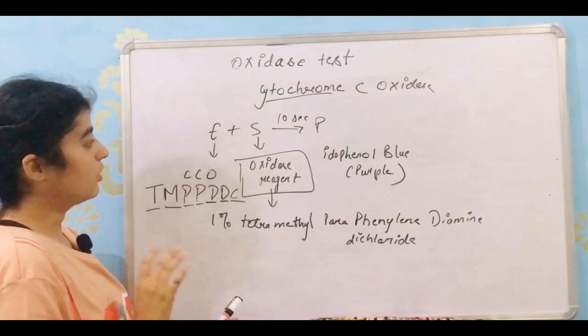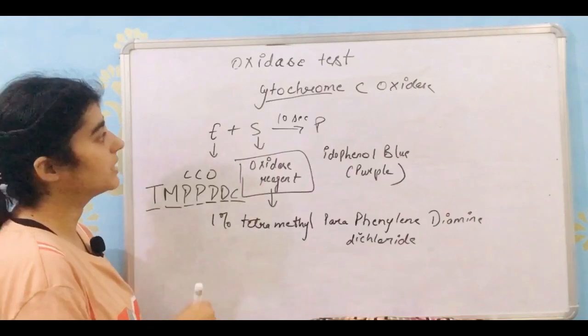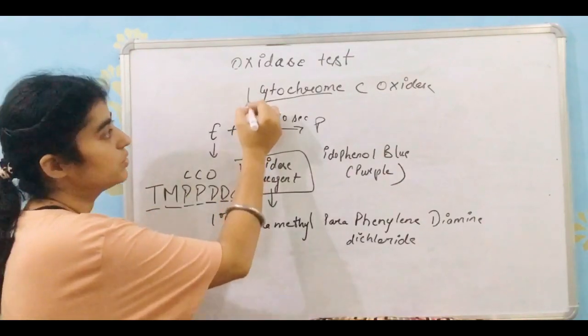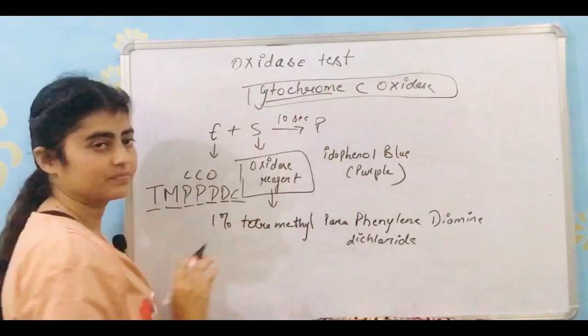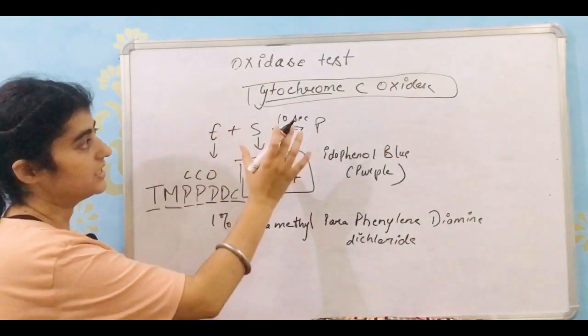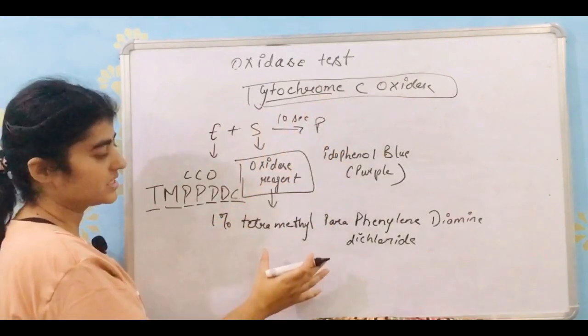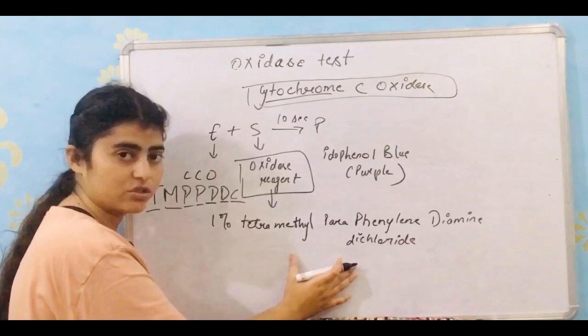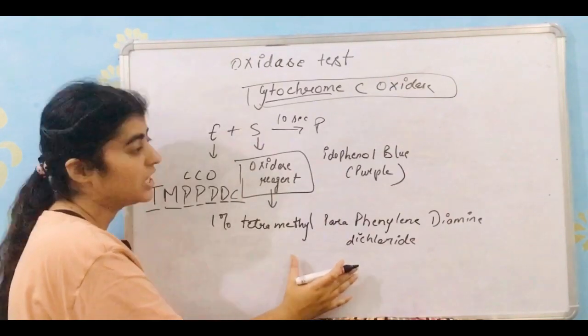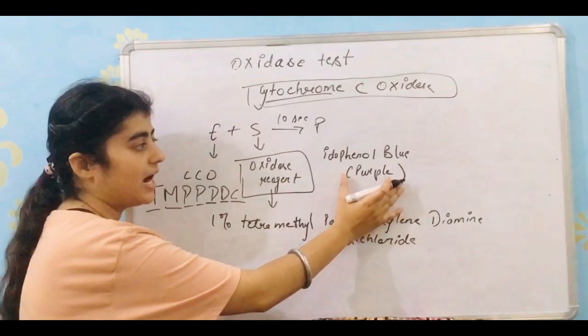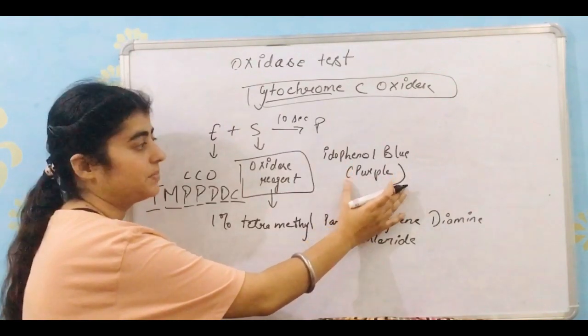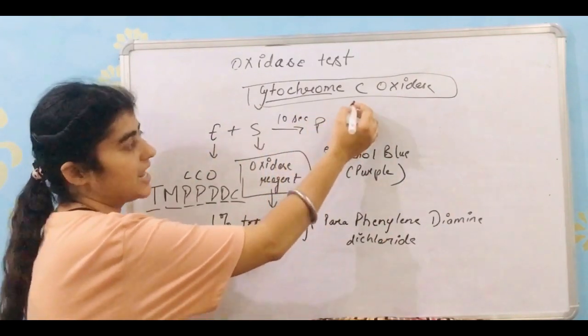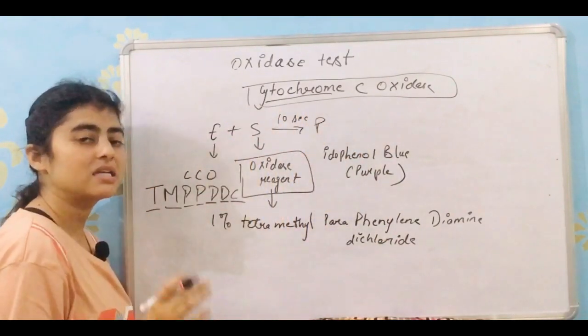Now what is the procedure? Moving further, one thing that I would like to tell you here is cytochrome C oxidase. This cytochrome C oxidase, this enzyme accepts electrons from this substrate to produce this dark colored purple, the idophenol blue.